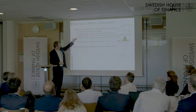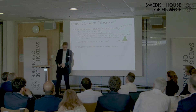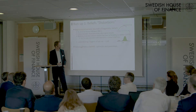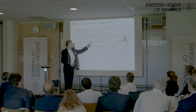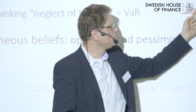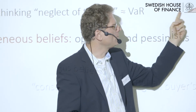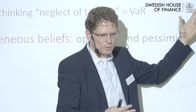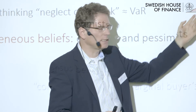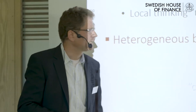Another behavioral or belief bias is local thinking, where you neglect tail risk to some extent — the worst outcome is overlooked. You can link that to a value-at-risk constraint: with VaR you don't take into account how the tail looks, you just look at the quantile and don't consider how bad it could be inside the tail. So it's an alternative way of capturing this neglect of tail risk.